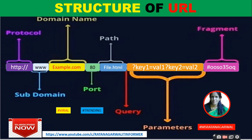The file name you have to register. Then come the query parameters — for example, a question mark followed by key1=value1, and another parameter key2=value2. This is how you can pass parameters in a URL.